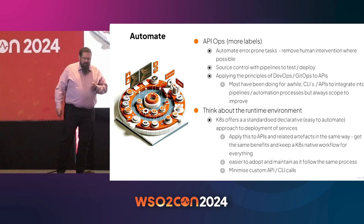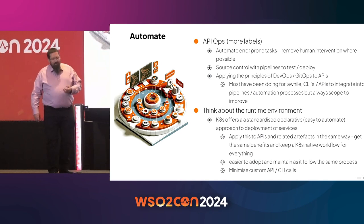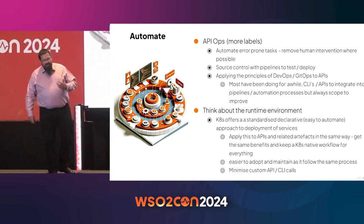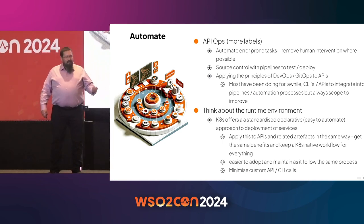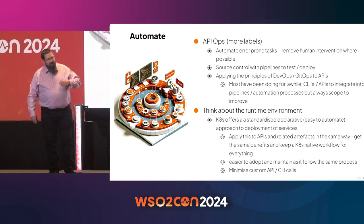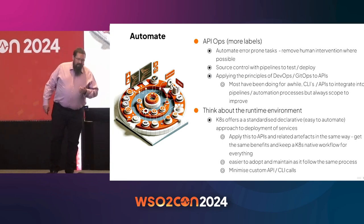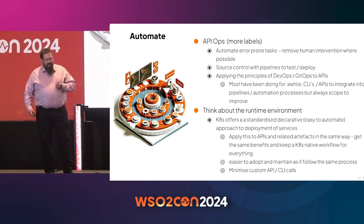On the runtime side, this is one of the key areas we've introduced APK for — more and more people are running within Kubernetes. Kubernetes always has a well-defined declarative approach to deploying and managing services within its environment. APK just extends that seamlessly, adding elements to enable full lifecycle API management, not just basic ingress controlling, and really makes it easier to adopt for those familiar with that environment and already using a core Kubernetes approach to managing their services.